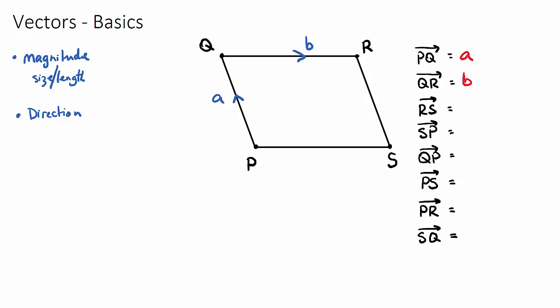What about R to S? There's no vector directly defined here, so we need to think about what a vector is — it's the journey with a distance (magnitude) and a direction. From R to S, it looks like it's the same distance as from Q to P, because it's a parallelogram. But from R to S, we would be going in the opposite direction. So the vector from R to S is actually the same as vector A but in the opposite direction — R to S would be negative A, because it's the same distance but in the negative, opposite direction.